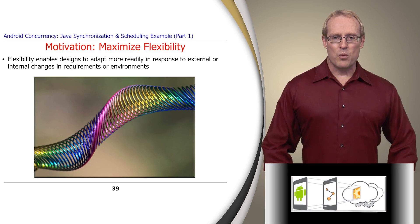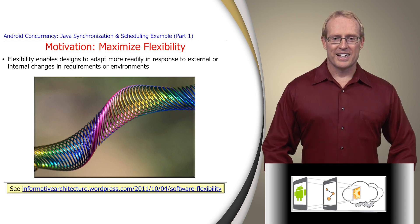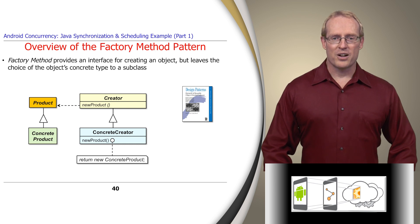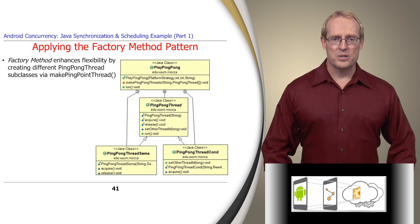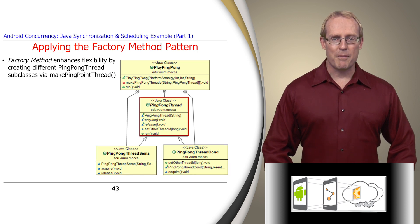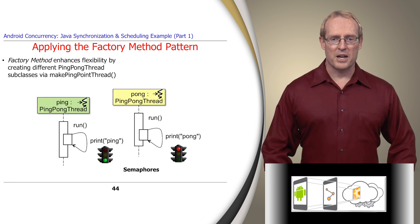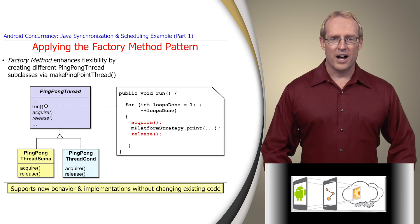Yet another software quality attribute we want to maximize is flexibility, which enables designs to adapt more readily in response to internal or external changes in requirements or environments. To achieve this quality attribute, we apply the factory method pattern, which provides an interface for creating an object but leaves the choice of the object's concrete type to a subclass. The ping pong program applies this pattern in several ways. For example, a variant of this pattern is used in the makePingPongThreadsFactory method that creates the appropriate subclass of PingPongThread. Depending on a runtime option configured by the user, a semaphore-based or condition object-based PingPongThread object is created without affecting the implementation of the playPingPong algorithm that uses the object returned by the makePingPongThreadsFactory method.